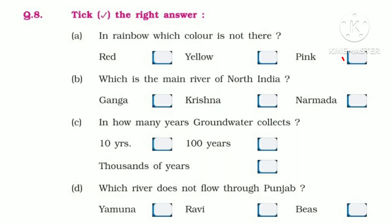Take the right answer. A. In a rainbow, which color is not there? Red, Yellow, Pink — Right answer is Pink. B. Which is the main river of North India? Ganga, Krishna, Narmada — Right answer is Ganga. C. In how many years does groundwater collect? Ten years, Hundred years, Thousands of years — Right answer is thousands of years. D. Which river does not flow through Punjab? Yamuna, Ravi, Beas — Right answer is Yamuna.